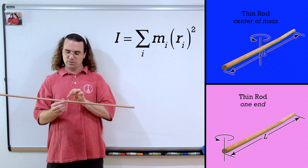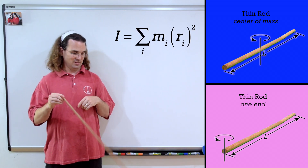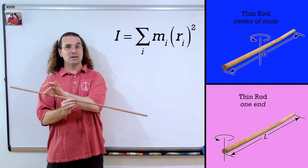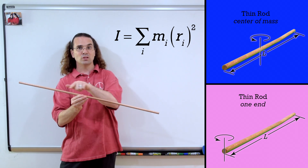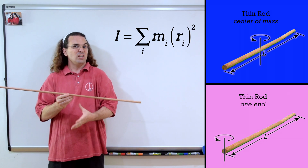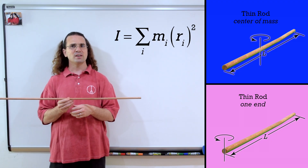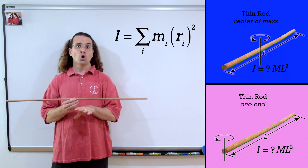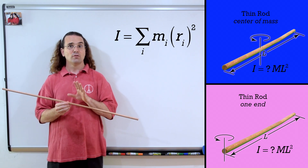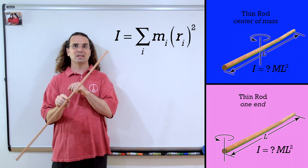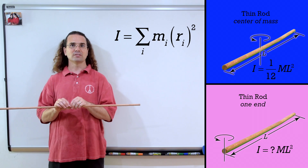Let's start with the last two: a thin rod about its center of mass and then about one end. The word 'thin' in thin rod means the radius of the rod is very small relative to the length of the rod — we consider the rod to essentially be one dimensional. Both moments of inertia for the thin rod are a fraction times ML², where M is the mass of the rod and L is the length. The moment of inertia of a thin rod rotating about its center of mass is one-twelfth times ML².